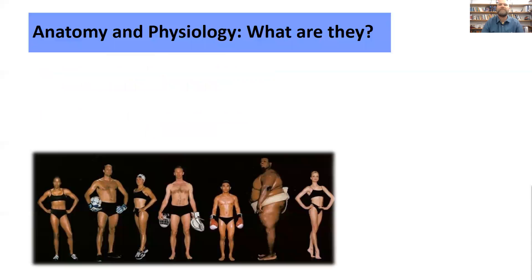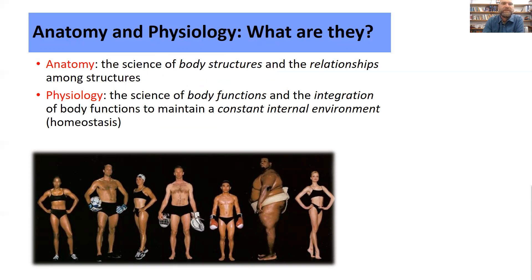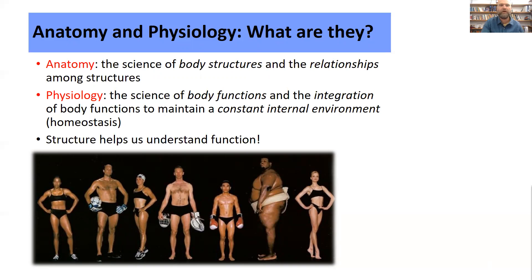So, human anatomy and physiology — what are they? Anatomy is the science of our body's structures and the relationships among structures. Physiology is the science of body functions and the integration of body functions, and specifically how they work to maintain a constant internal environment, or homeostasis. You can think of anatomy as the science of nouns related to the body — the structures and things that make up the body — whereas physiology is more the science of the verbs of the body, the actions and what it does. These two things are very closely related, and the structure of body parts helps us understand how they function.